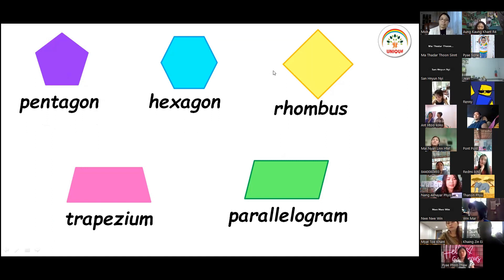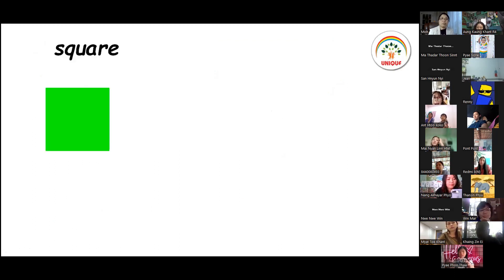Then we have pentagon, hexagon, rhombus, trapezium, and parallelogram. These are the properties that we can use for these shapes.